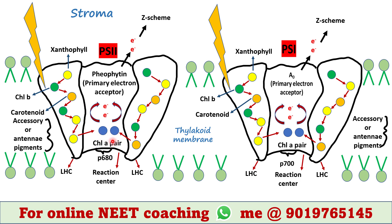In the reaction center, only two molecules of chlorophyll a are present, which are bluish in color. Here the difference comes between PS2 and PS1. In PS2, this chlorophyll a pair is called P680, which can absorb only 680 nanometer wavelength light. In PS1, the chlorophyll a pair is called P700, which can absorb only 700 nanometer wavelength light.